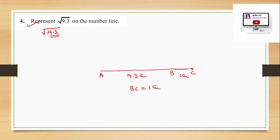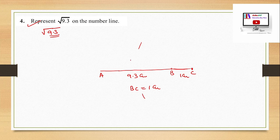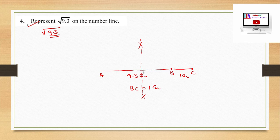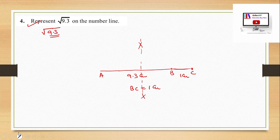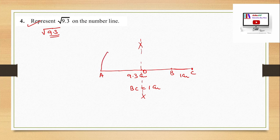Now find the midpoint O of AC by drawing arcs from A and C with half the distance AC. Draw a perpendicular bisector — it intersects AC at the midpoint O. With O as centre and OA as radius, draw a semicircle.